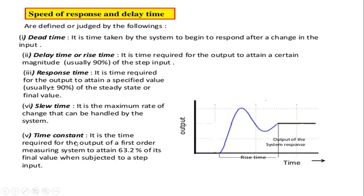The time constant is very important and will be studied further when covering order of systems. It is defined as the time required for the output of a first-order system to attain 63.2% of its final value when subjected to a step input. The instrument typically reaches steady state after two to five time constants. This is why you should always wait before taking a reading — to account for dynamic errors, dynamic lags, and the time constant needed to reach steady state.